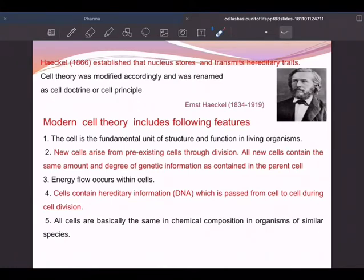Now we know that nucleus has got DNA and RNA, and these are the responsible things for hereditary traits. So cell theory was modified accordingly and renamed as modern cell theory. This modern cell theory includes the following points.